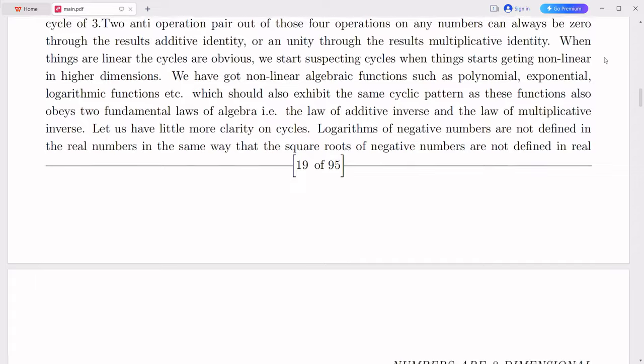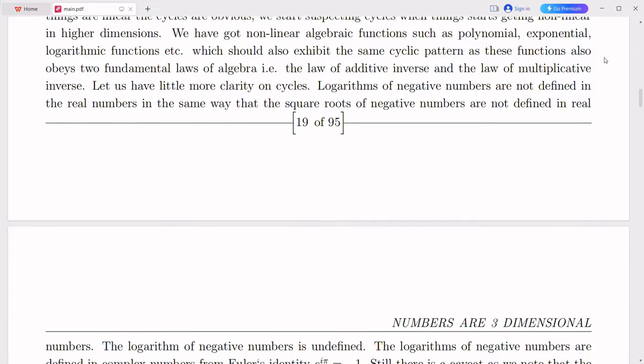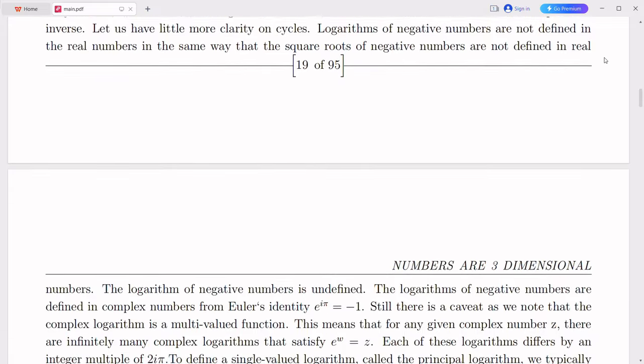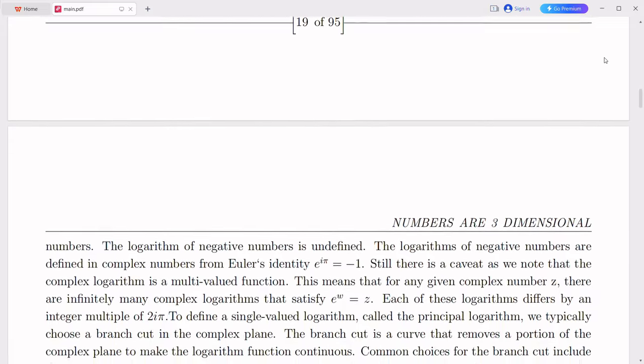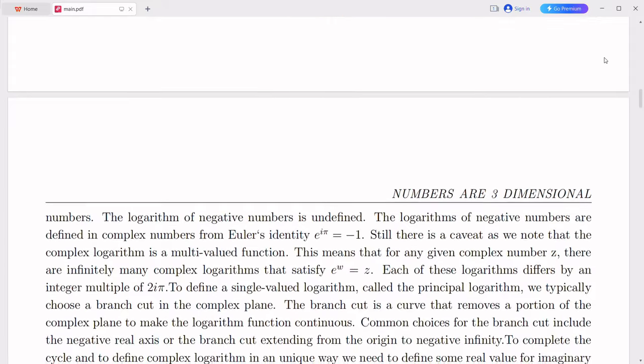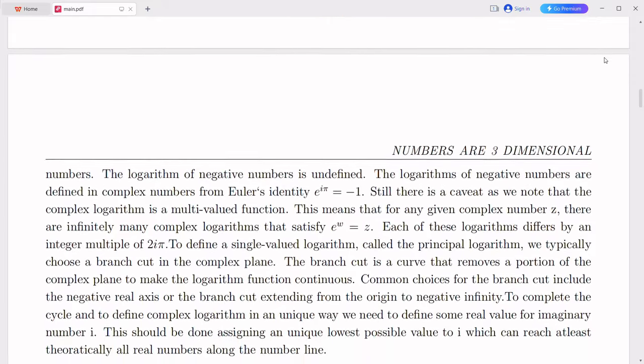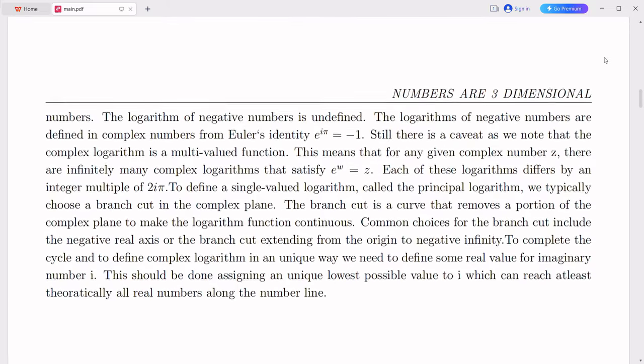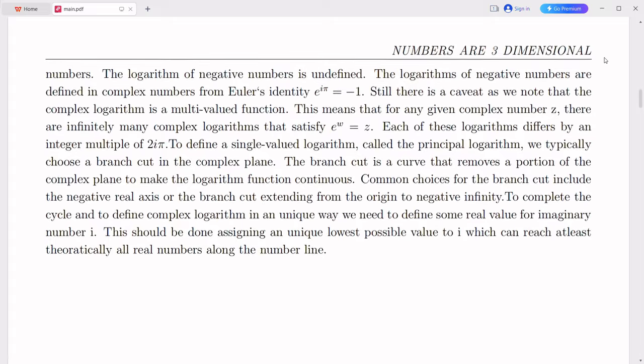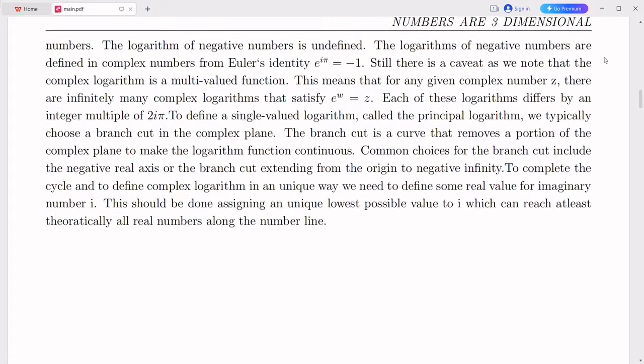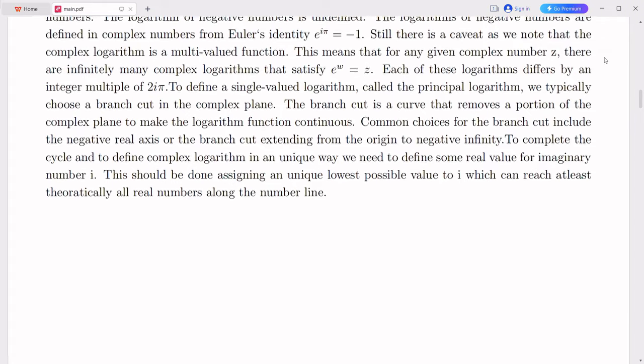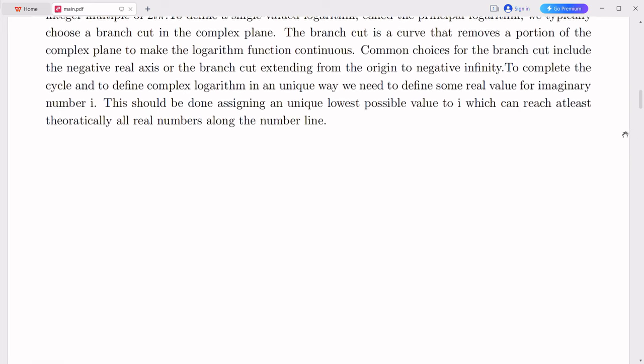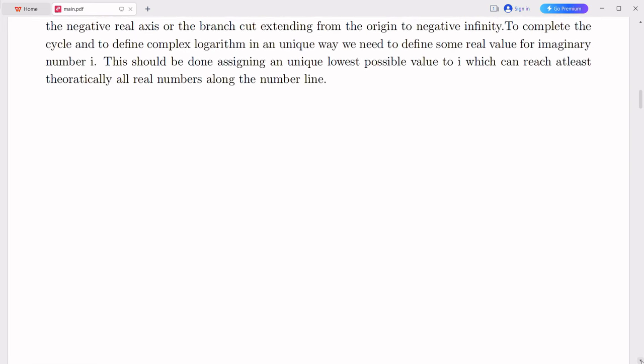The fine structure constant, denoted by alpha, is a fundamental constant in physics that characterizes the strength of the electromagnetic interaction between charged particles. Its value is close to 1/137. The fine structure constant is dimensionless and plays a crucial role in various areas of physics, including quantum electrodynamics. On the other hand, the Charles's ratio is a constant that arises from the ideal gas law and relates the change in volume of an ideal gas to its change in temperature at constant pressure. Approximately, this ratio is close to 1/273.